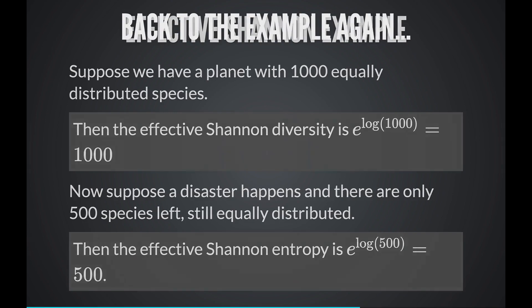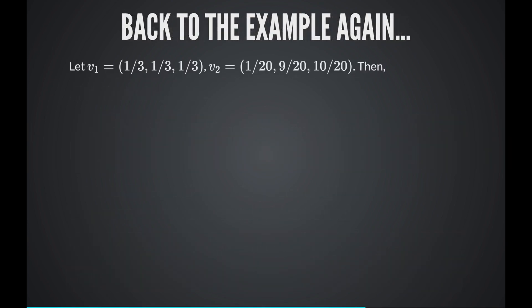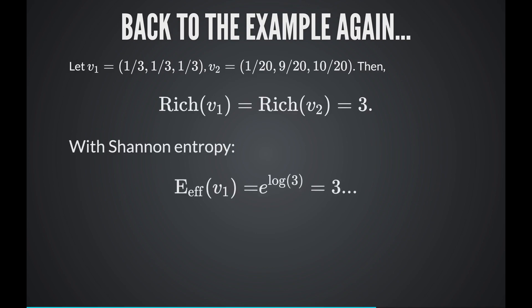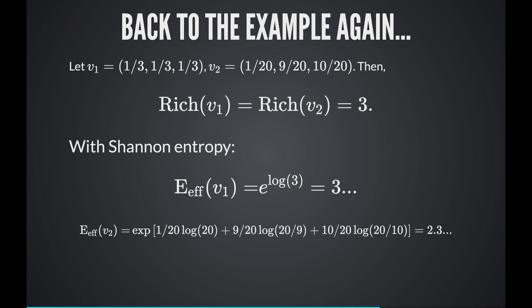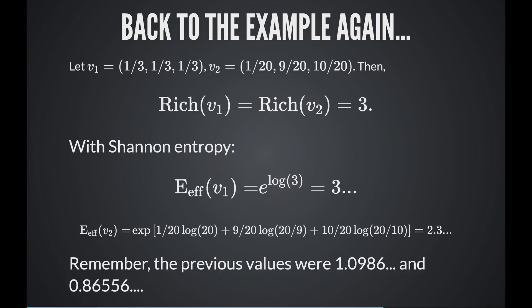Going back to our example of three species equally distributed in one region versus unequally distributed in another: the species richness is still three in both regions. But with the effective Shannon entropy, the first region scores 3, while the second region scores 2.3. The unequal distribution now produces a much greater difference between the two numbers — a difference of about 0.7.